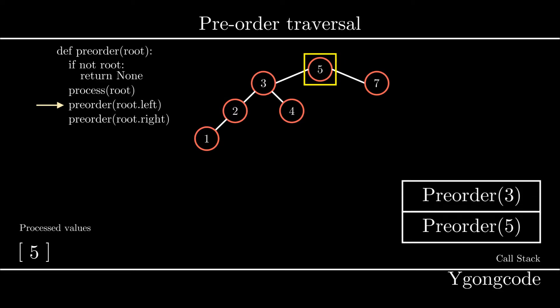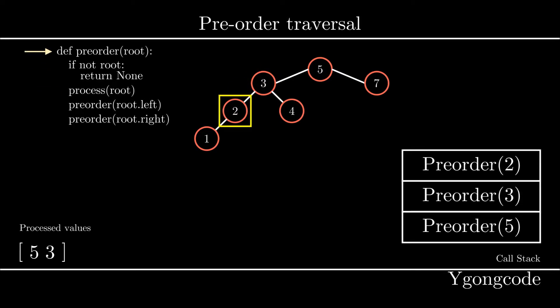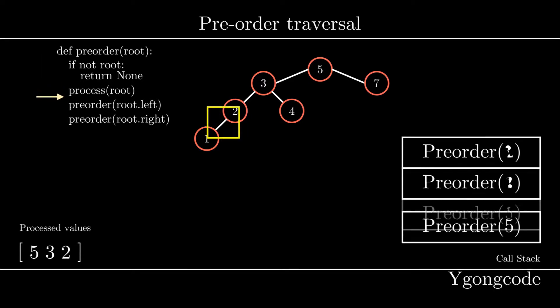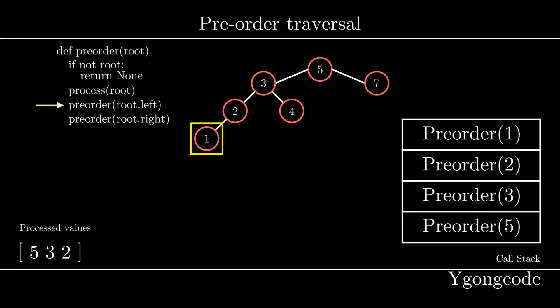Here we push pre-order 3 into our call stack. At pre-order 3, we process its value and make a recursive call to its left subtree, which is 2. So we push pre-order 2 into the call stack and start executing pre-order 2. At pre-order 2, we again process its value and make a recursive call to its left subtree 1, and push pre-order 1 into the call stack.